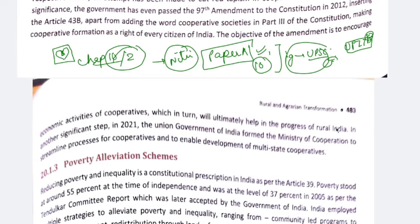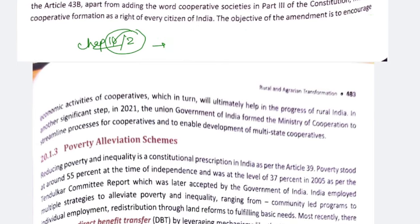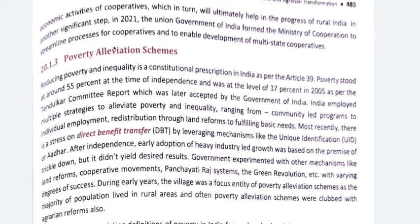We started Chapter 10 in the previous video, which discussed rural and agrarian transformation in India. So far we have covered the Community Development Program, cooperatives — what they are and how they work — and different thinkers' views on these programs. Today we will look at poverty elevation schemes. You need to remember the names of different schemes that the government has introduced over time, including rural development and agriculture-specific schemes.